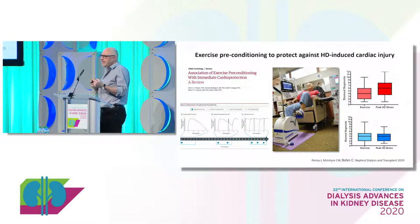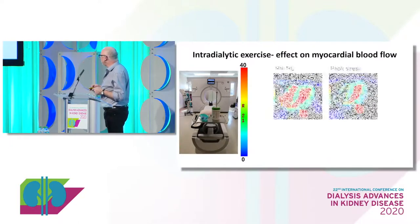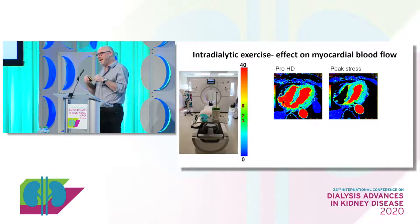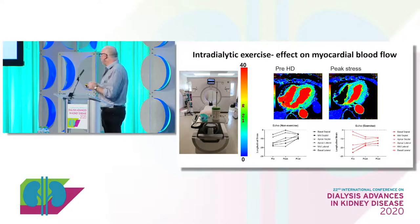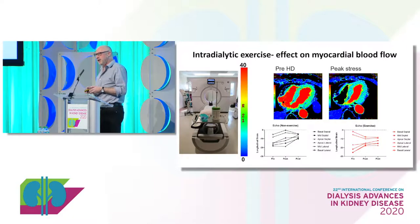Why do we think it's ischemic protection and not improved blood pressure? This is data from very high-resolution myocardial perfusion CT — when patients were treated with exercise, there was no effect on perfusion; perfusion was identical. But when we looked at contractile function, they stunned less. From that we infer that it was the improved ability to tolerate ischemia that was the main mechanism by which exercise helped them.